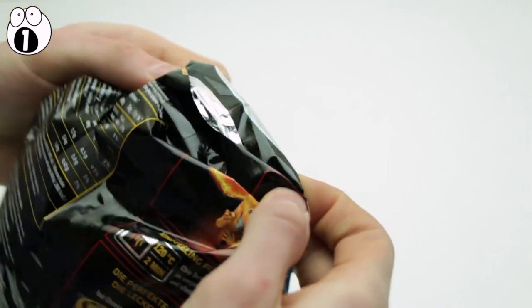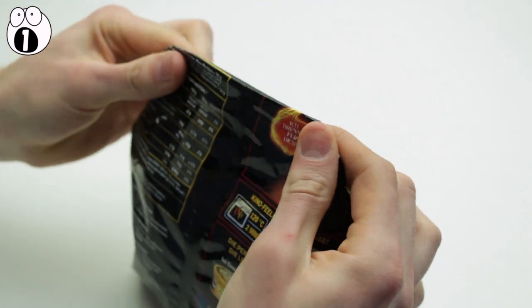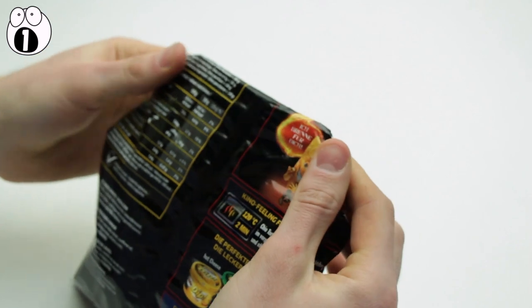Once that is done, roll it in the opposite direction, tucking everything into a fold and you will have a nicely sealed bag of chips. Now you can sit back and relax while your chips stay intact and crunchy.